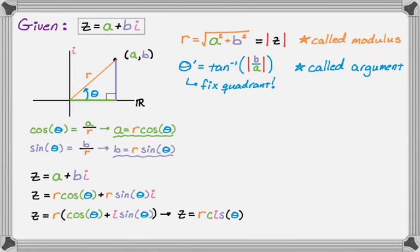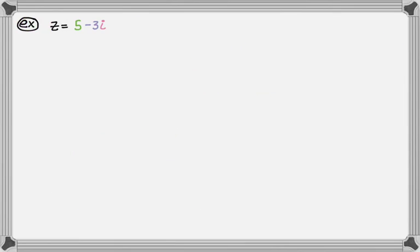So if we have z equals five minus three i. So to figure out r, I pretty much just dive in with the formula. So five squared plus quantity negative three squared. So that's going to be radical 34.